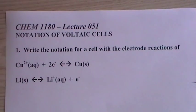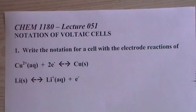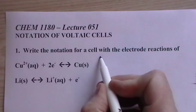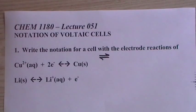Okay, so write the notation for a cell with the electrode reactions given here. And of course this double arrow means this—it can go either way, at least for now until we put them together.